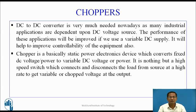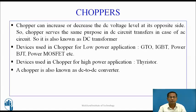It is nothing but a high-speed switch which connects and disconnects the load from a source at a high rate to get variable or chopped voltage at the output. Chopper can increase or decrease the DC voltage level. It serves the same purpose in DC circuits as transformers do in AC circuits, so it is also known as a DC transformer.